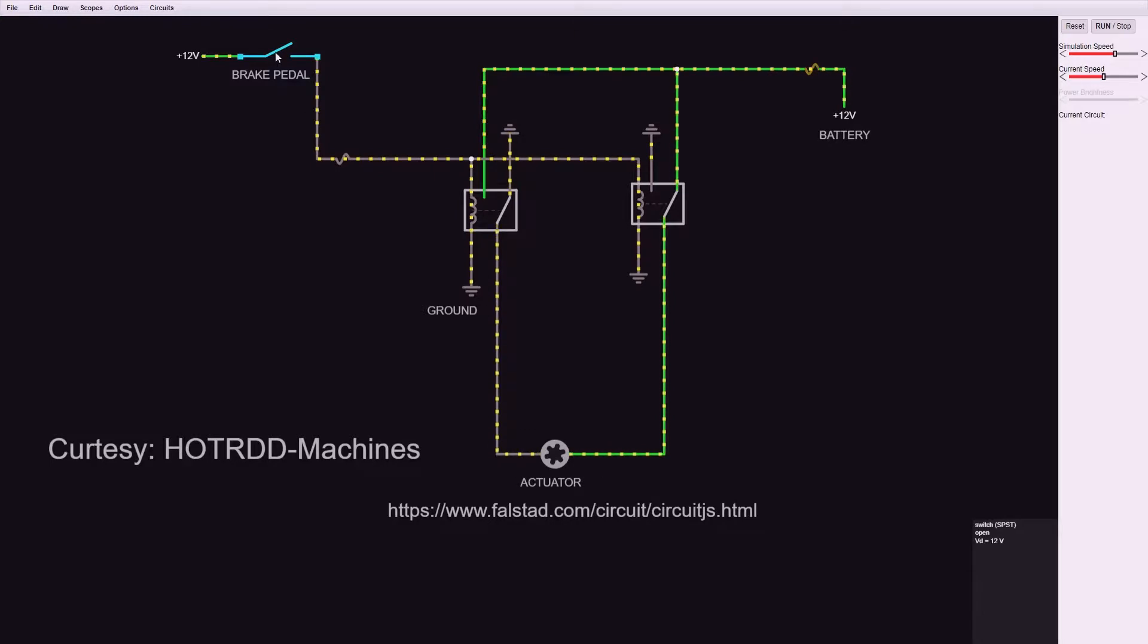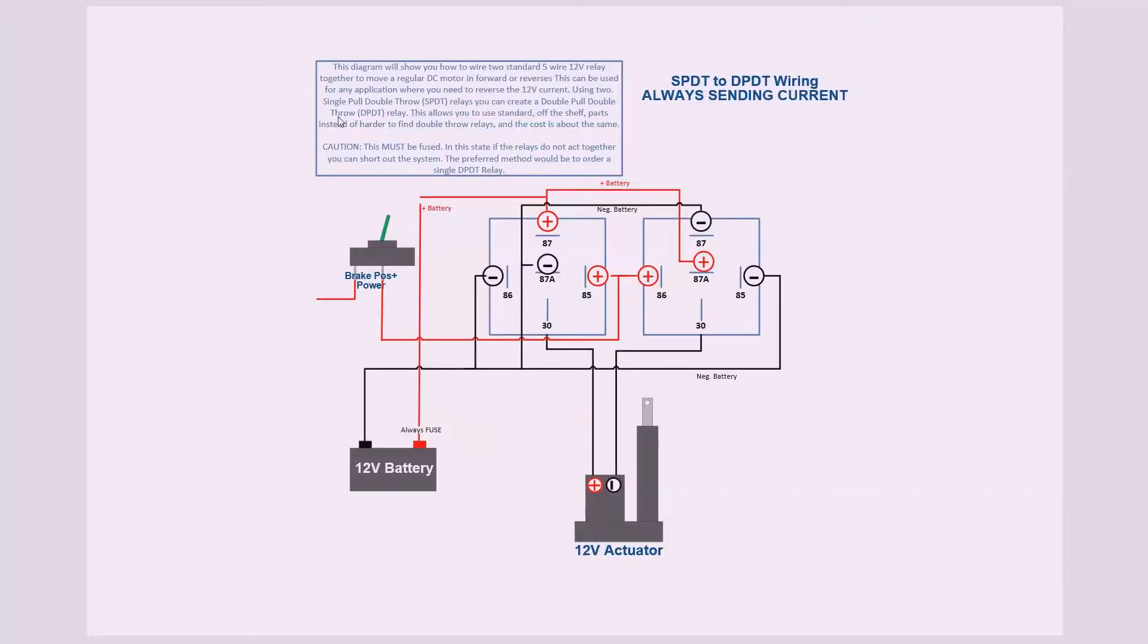But once again, if we close the brake pedal, what you see is the little arms inside the relays—the magnets come on and those little arms switch directions. So if we go back to our original diagram, what we're using here is positive power from the brake to trigger the relays to change state.